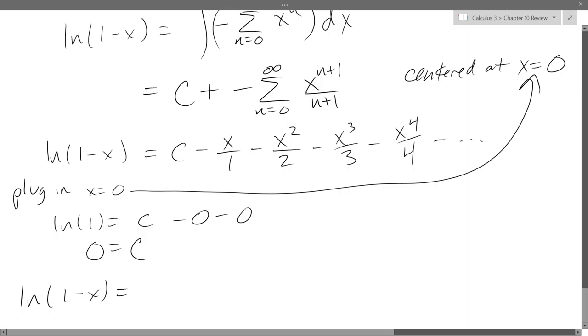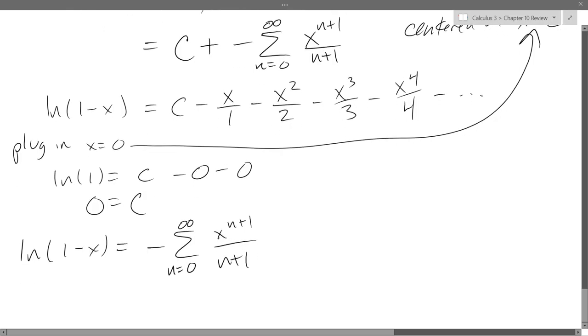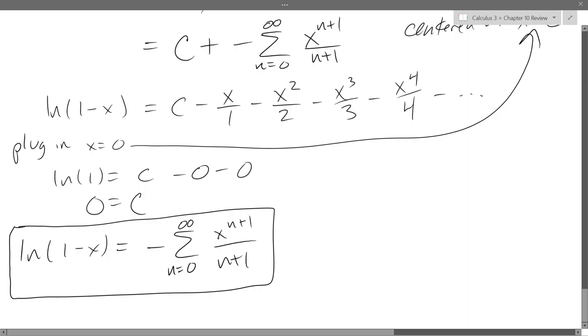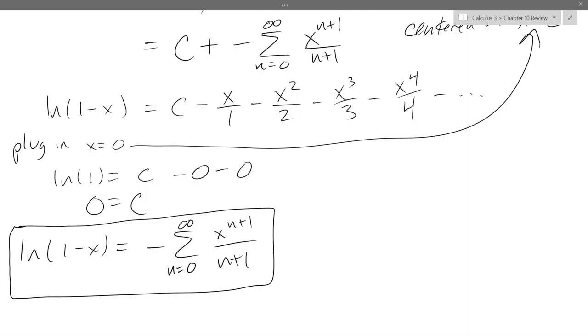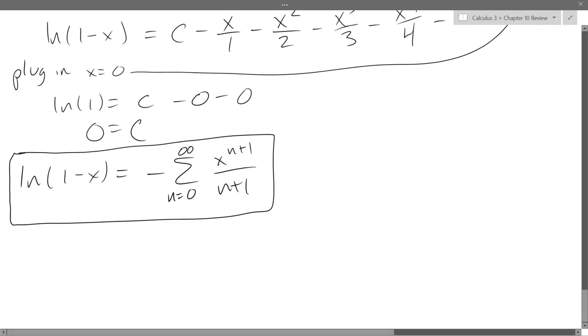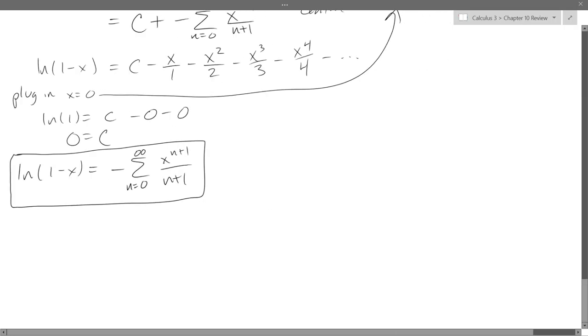So I can write the final answer. We did get a plus c but I can take care of it because I know what I want, and all I have to do is plug in the correct x value and it will basically throw away any term with the x in it. So I can write my final answer ln one minus x equals negative summation x to the n plus one over n plus one. So I didn't do any interval of convergence. I think you'll have some homework problems that do intervals of convergence. I could say probably the ratio test would be a good one for this.